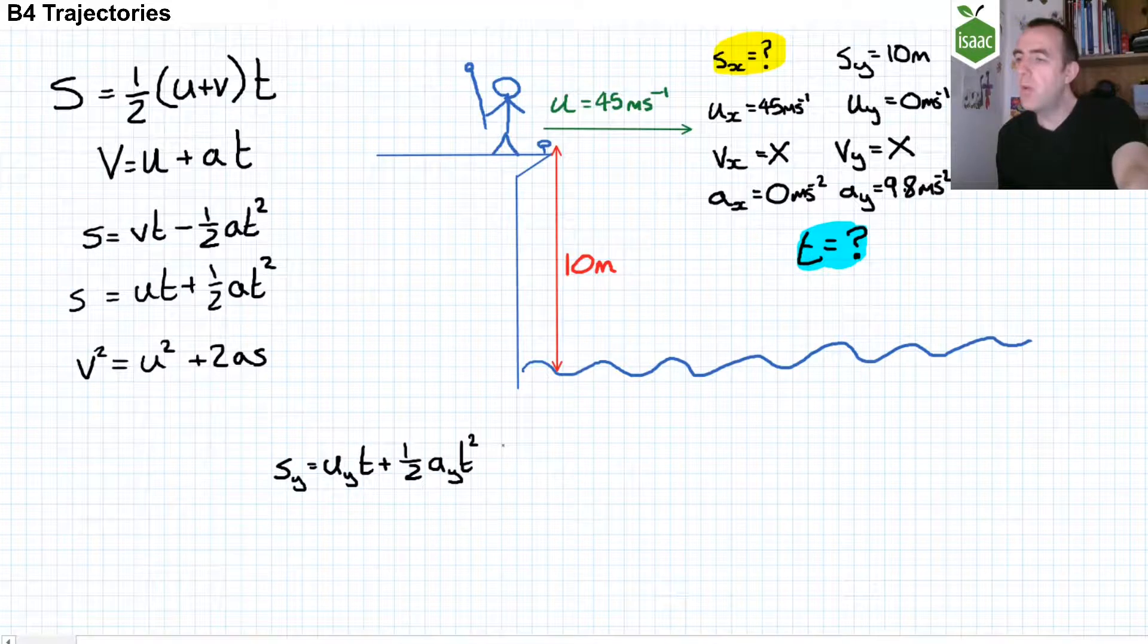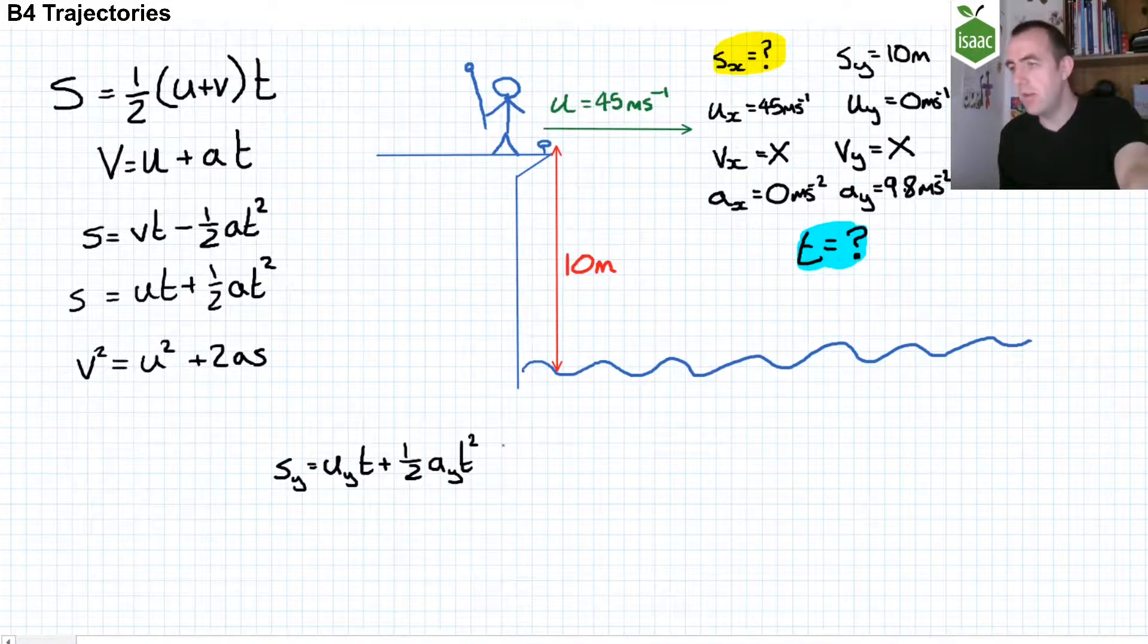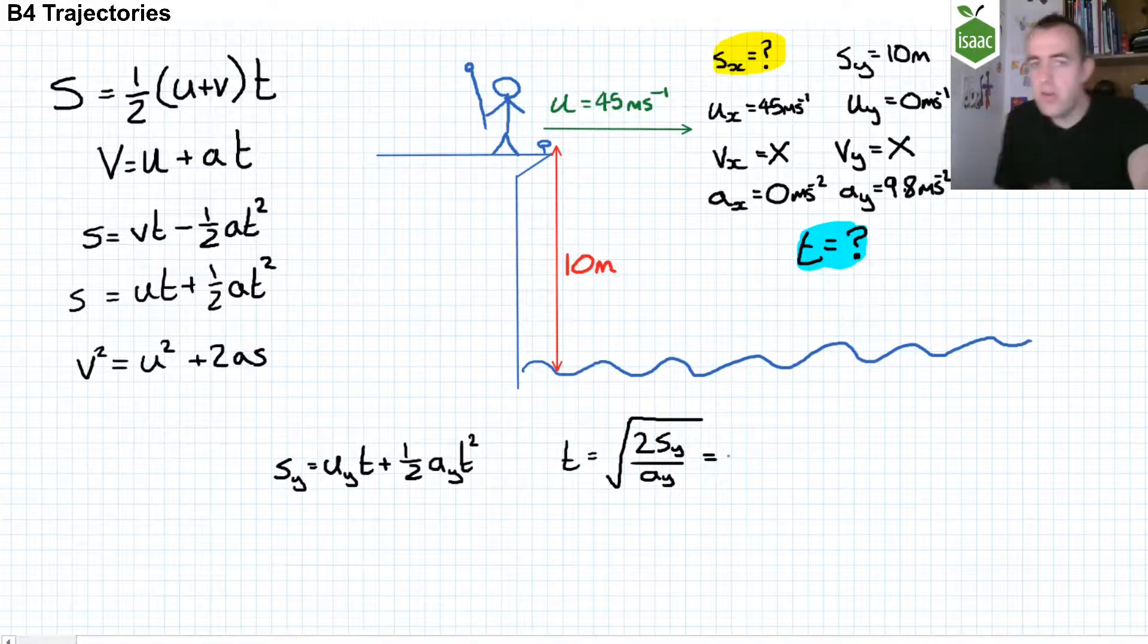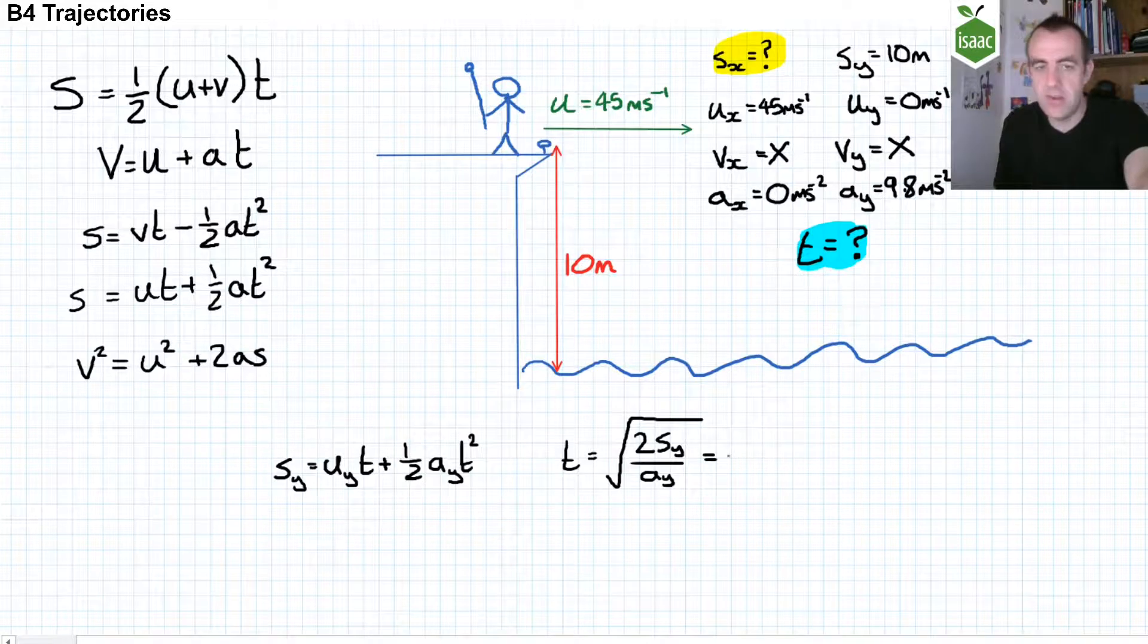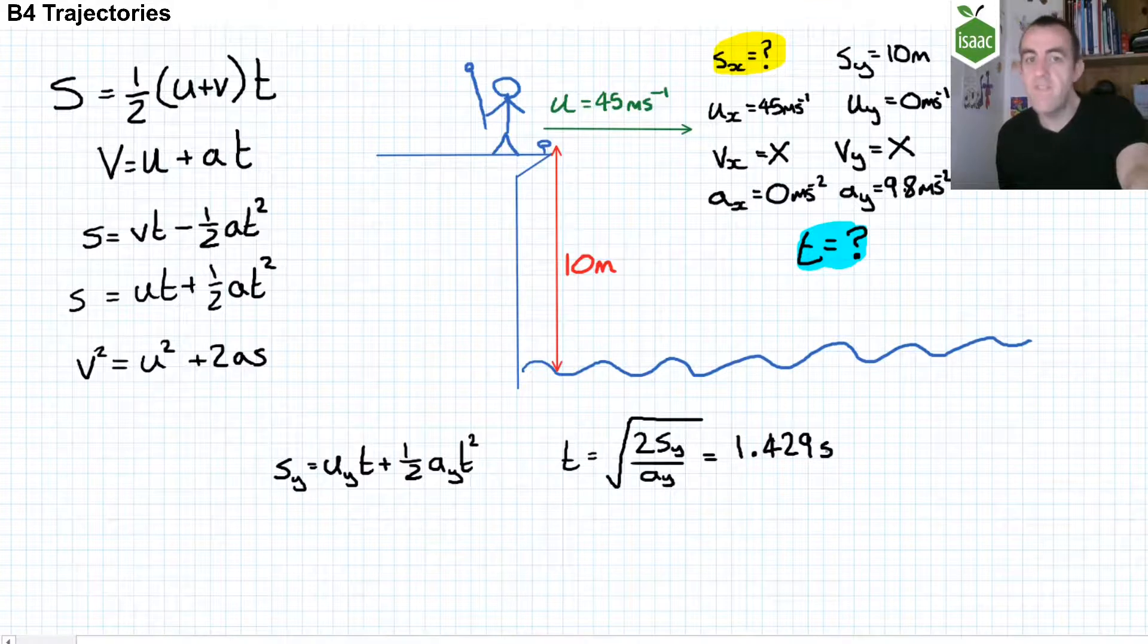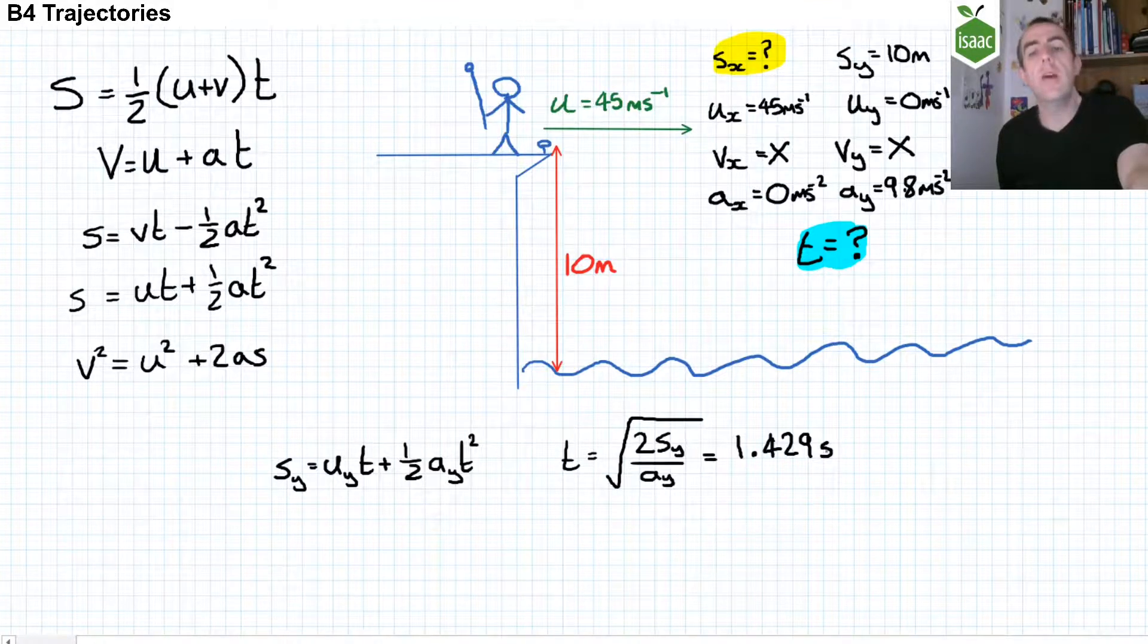The fourth equation, the NOV equation, for the y-direction becomes as I've written at the bottom here. Because u in the y-direction is zero, the equation simply becomes as I've written here. And so the time it takes for the ball to be projected that distance vertically is 1.429 seconds.